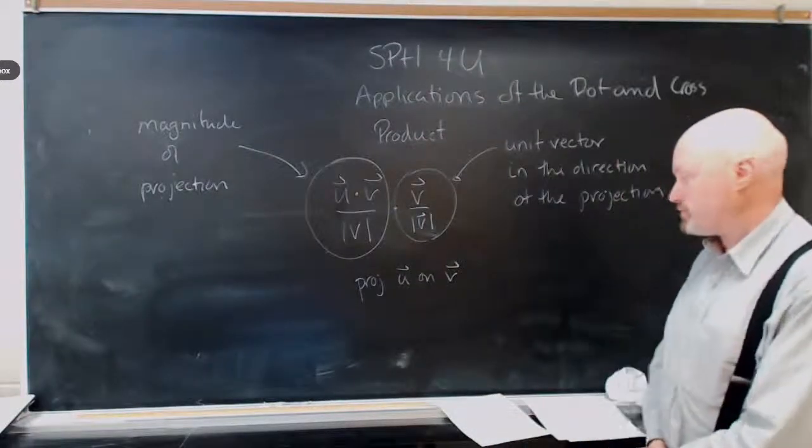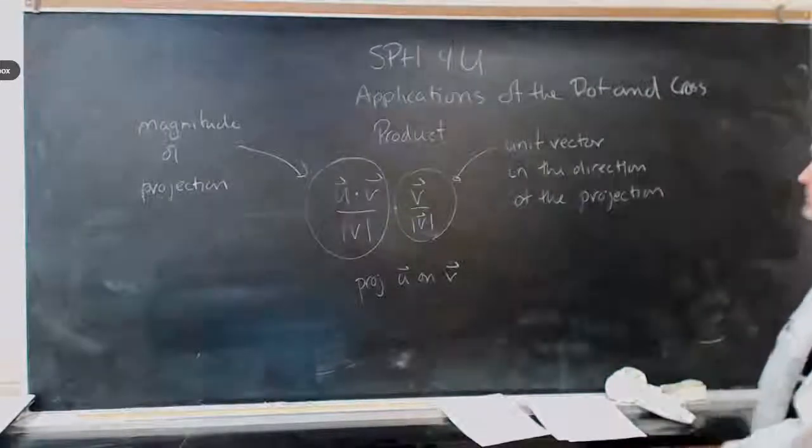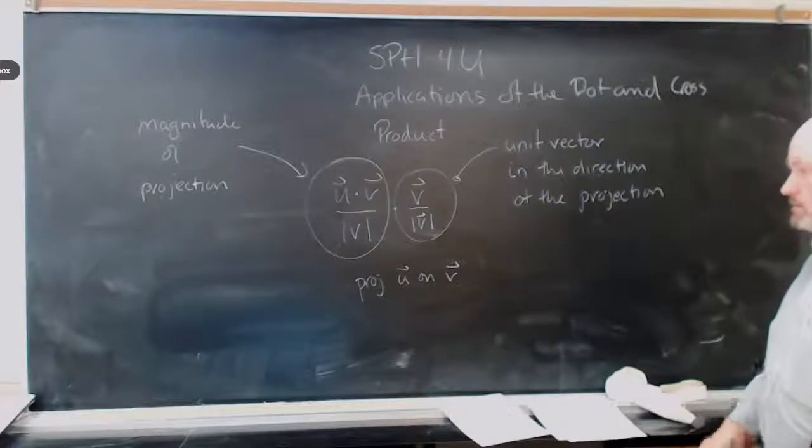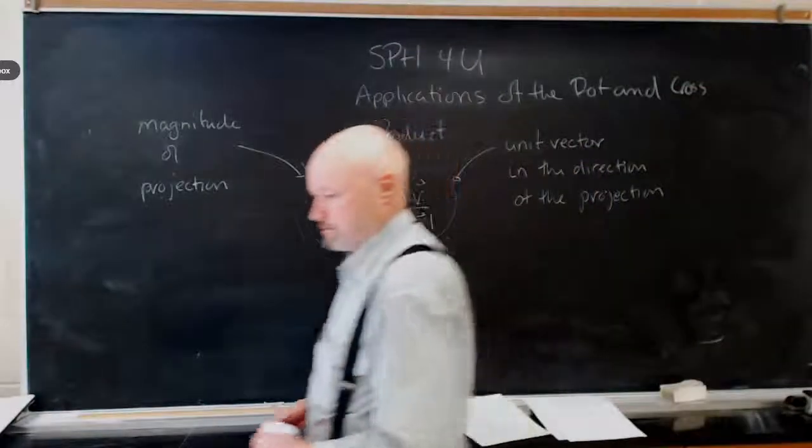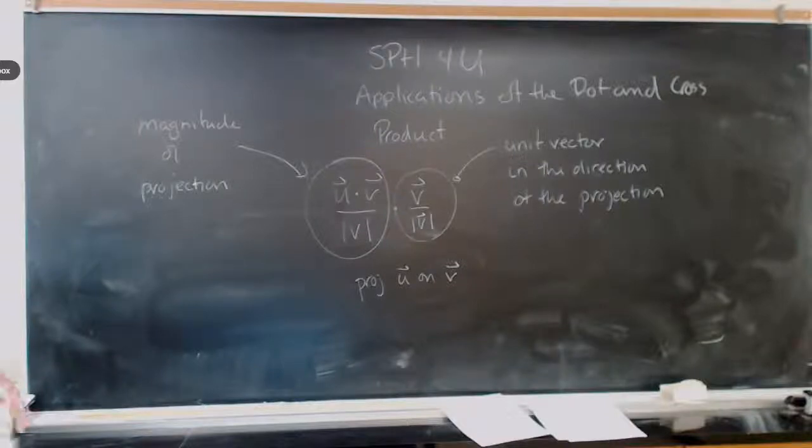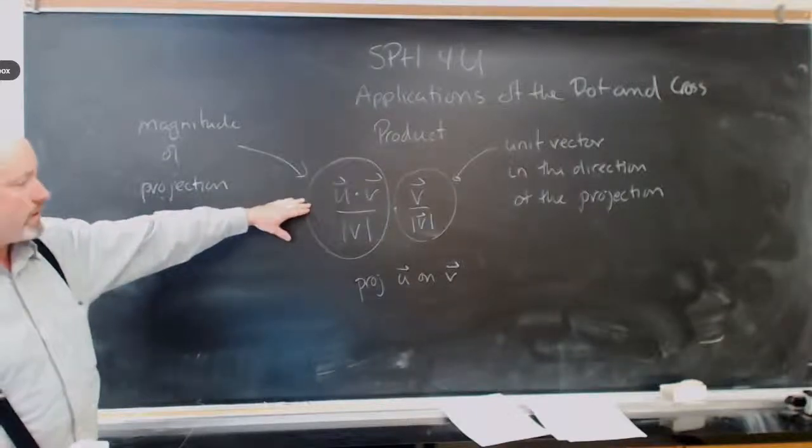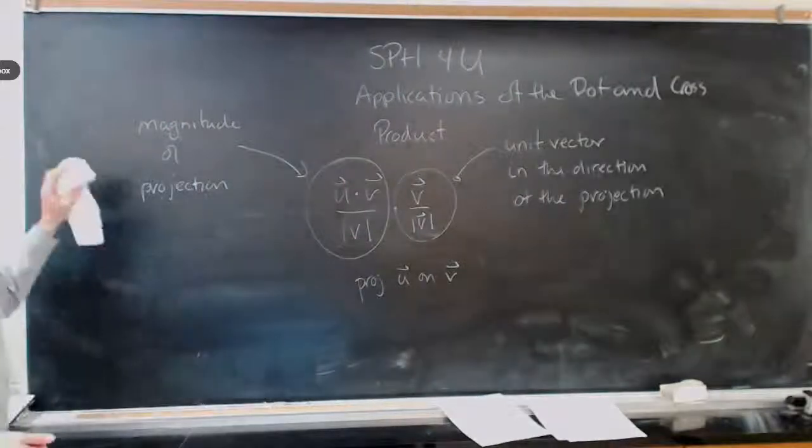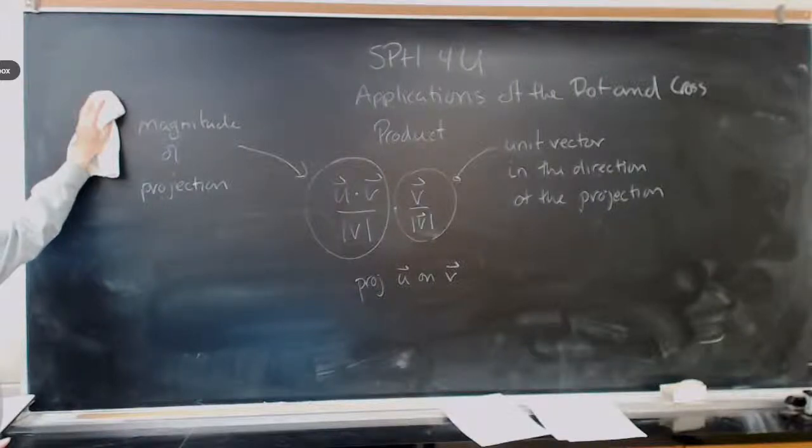So this is the magnitude of the projection. And this is the unit vector in the direction. So that's going to get us a vector that's the right size there and it's going to get us a vector that's the right direction. So this is actually the projection of U on V. I kind of did it backwards. I had the projection of V on U. So I got part way into that.